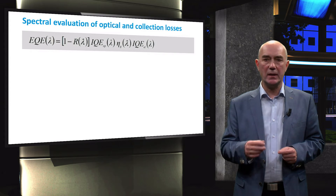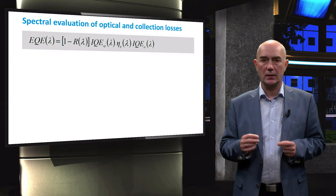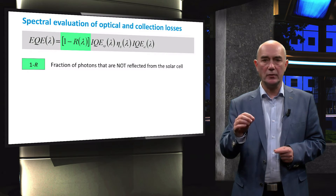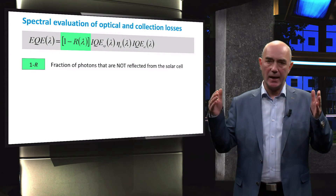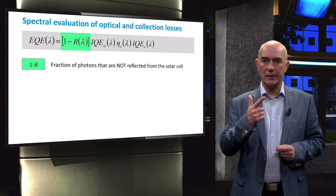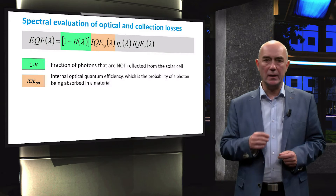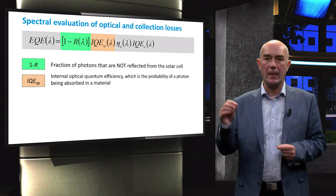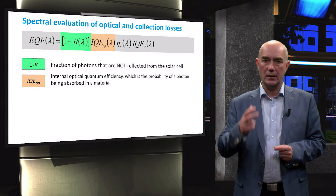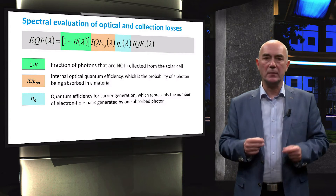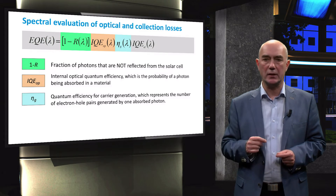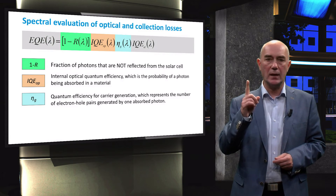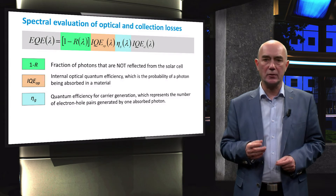The EQE quantifies the loss of the photocurrent density due to the combined effect of total reflection, parasitic absorption, and recombination. It can be approximated by an equation where the first term, 1-R, represents the fraction of photons that are not reflected from the solar cell and hence enter it. The second term, IQE, is the internal optical quantum efficiency — the probability of a photon being absorbed in a material. The third term, eta-G, is the quantum efficiency of the generation of charge carriers, representing the number of electron-hole pairs generated by one absorbed photon.